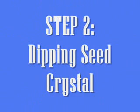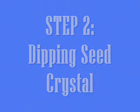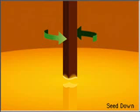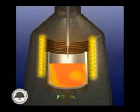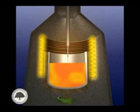Step 2: Dipping the Seed Crystal. A small piece of single crystal material, known as a seed crystal, is dipped into the saturated molten silicon solution. The seed crystal is used to grow a large crystal of the same material. The large crystal begins to grow as the seed crystal is dipped into the molten silicon and then cooled.